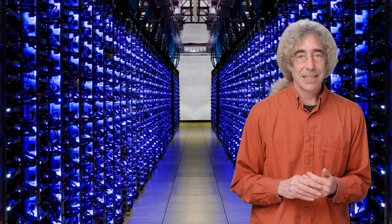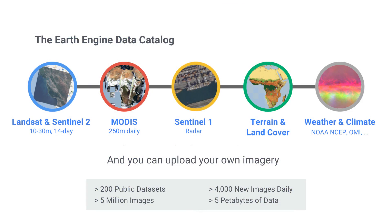All analyses are run in parallel across many machines in the Google Cloud. Our data catalog includes over 40 years of public satellite data, elevation data, atmospheric data, and more. We also provide tools to let you upload your own private data or share it as you'd like.